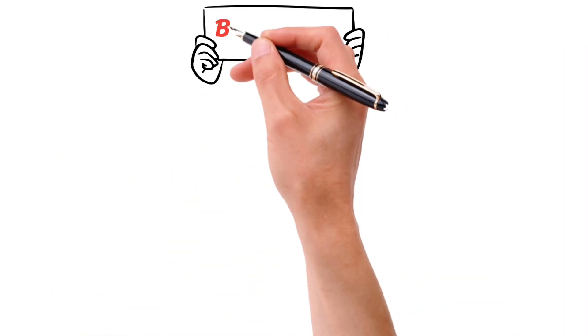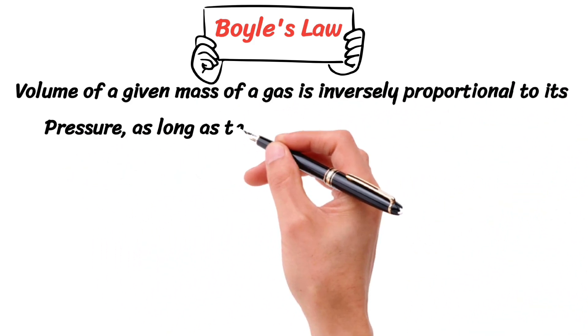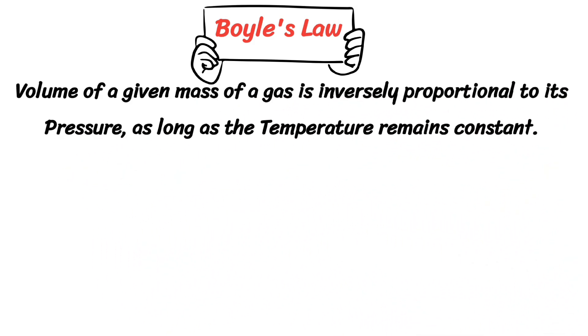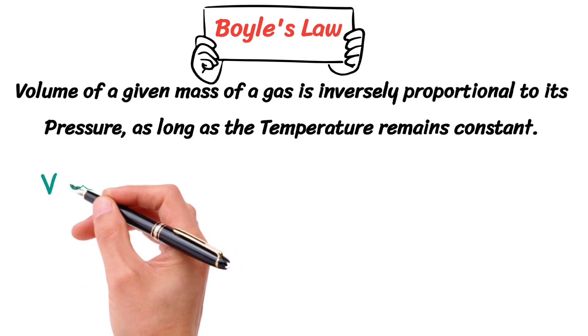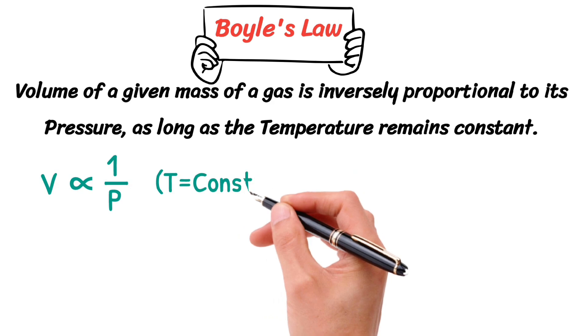According to Boyle's law, the volume of a given mass of a gas is inversely proportional to its pressure, as long as temperature remains constant. Mathematically, it can be written as V is inversely proportional to P, while temperature T remains constant.